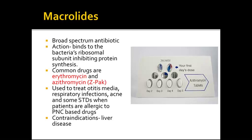Macrolides are broad-spectrum antibiotics. They act by binding to the bacterial ribosomal subunits, inhibiting protein synthesis. Common drugs are erythromycin and azithromycin, also called a Z-Pak. Over to the right is an example of a Z-Pak — usually the first dose is heavier, so in this case there are two pills, and then thereafter the patient takes one pill per day as labeled.